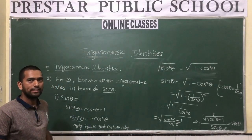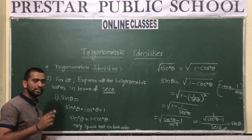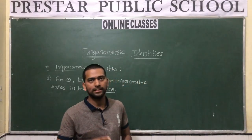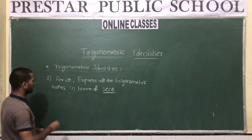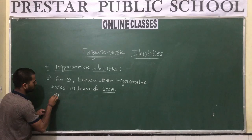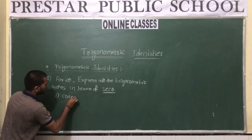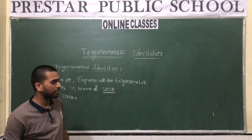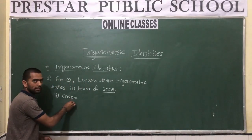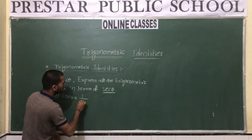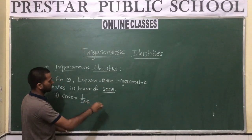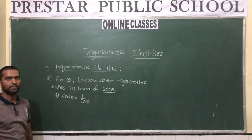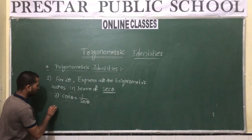Now let us convert the second trigonometric ratio, cosθ, in terms of secθ. There is no need to apply any trigonometric identity here because directly we know that cosθ is the reciprocal of secθ. So cosθ = 1/secθ. This is the answer.